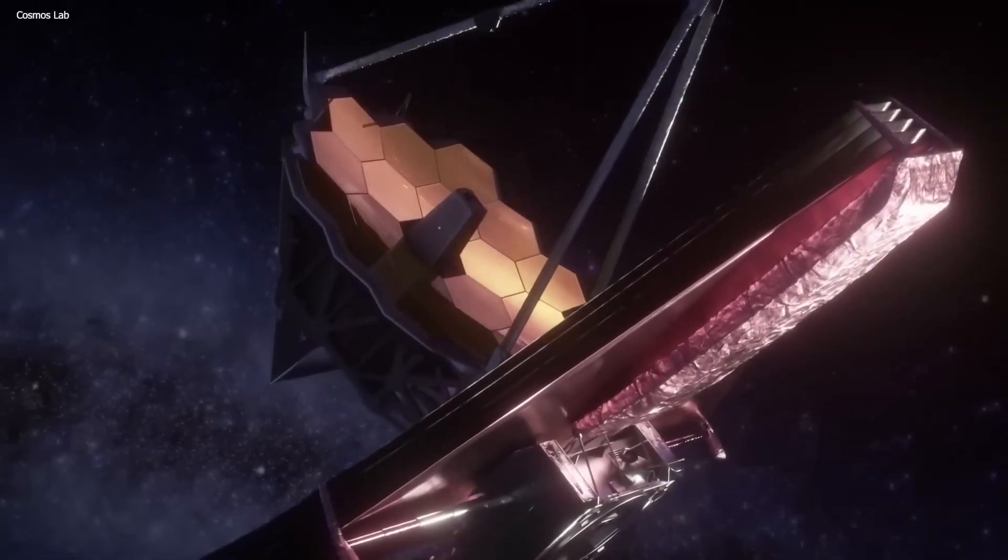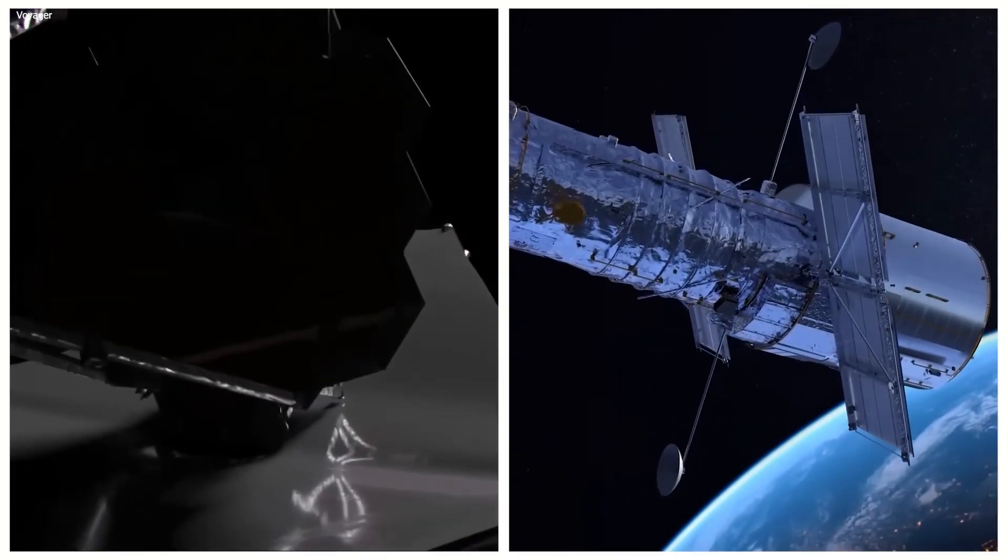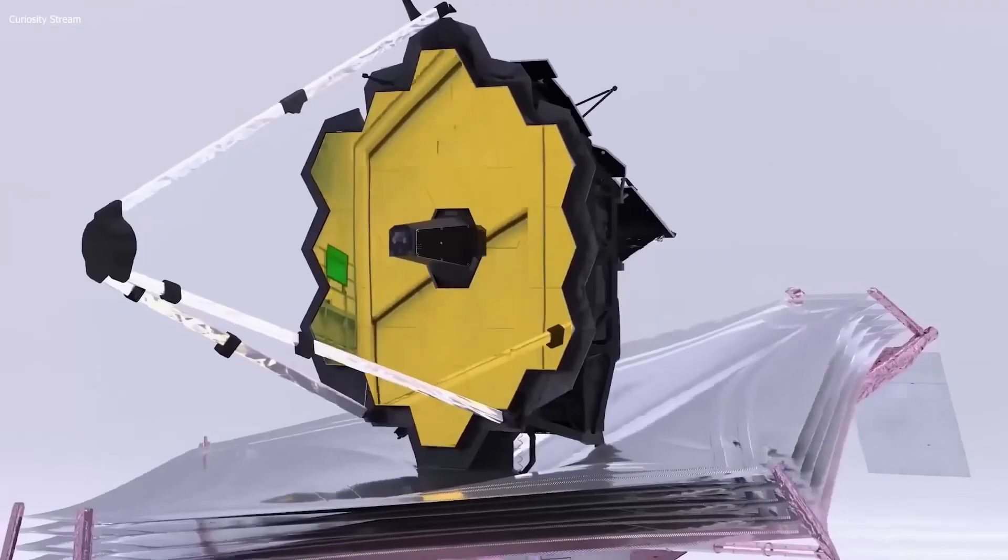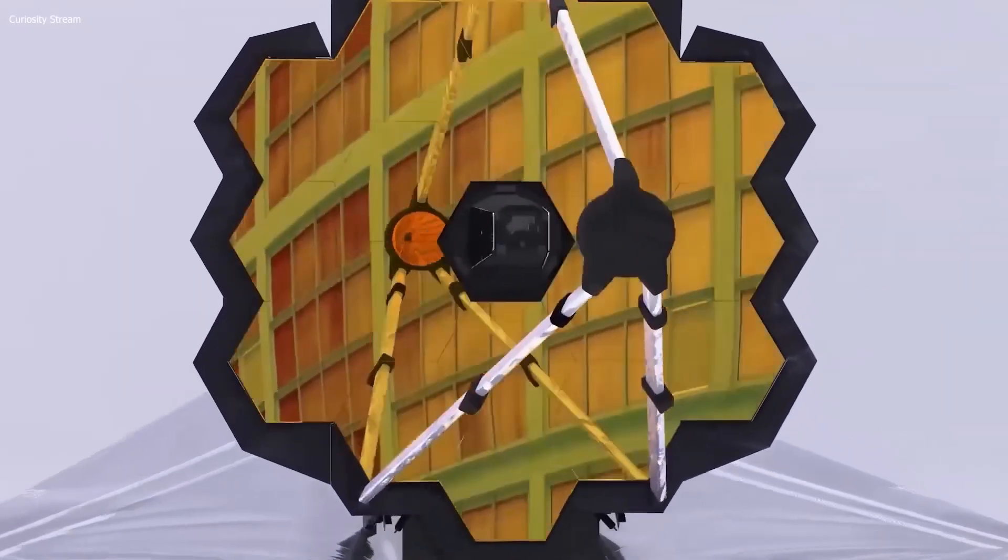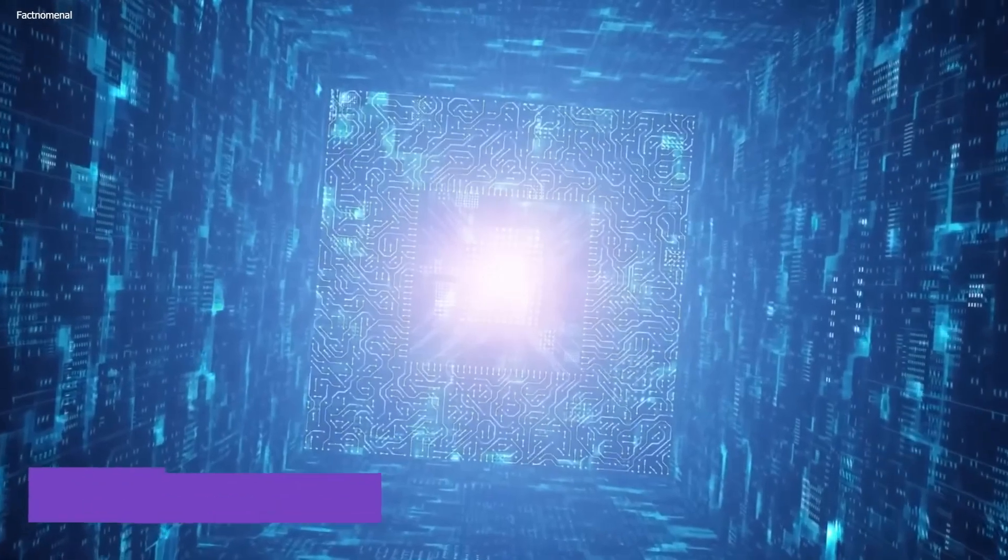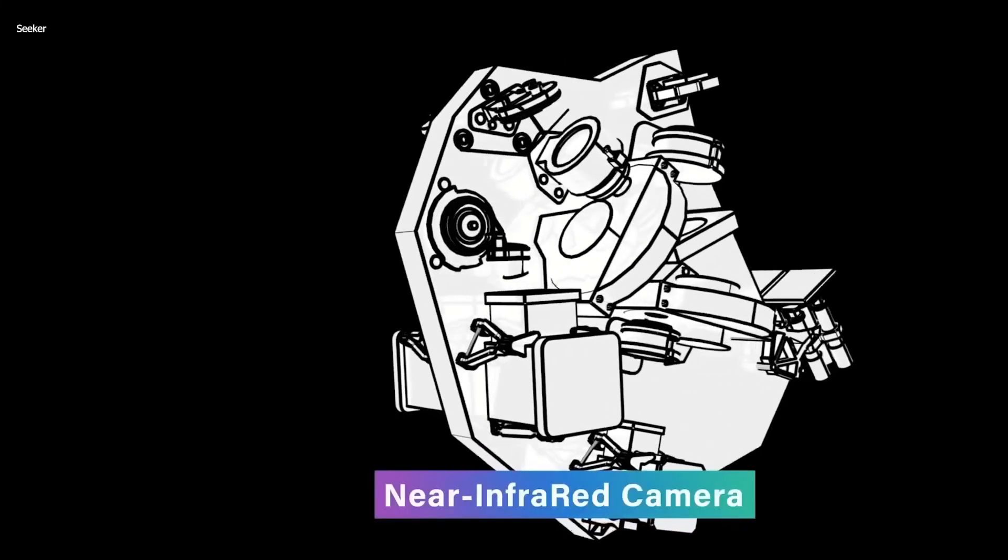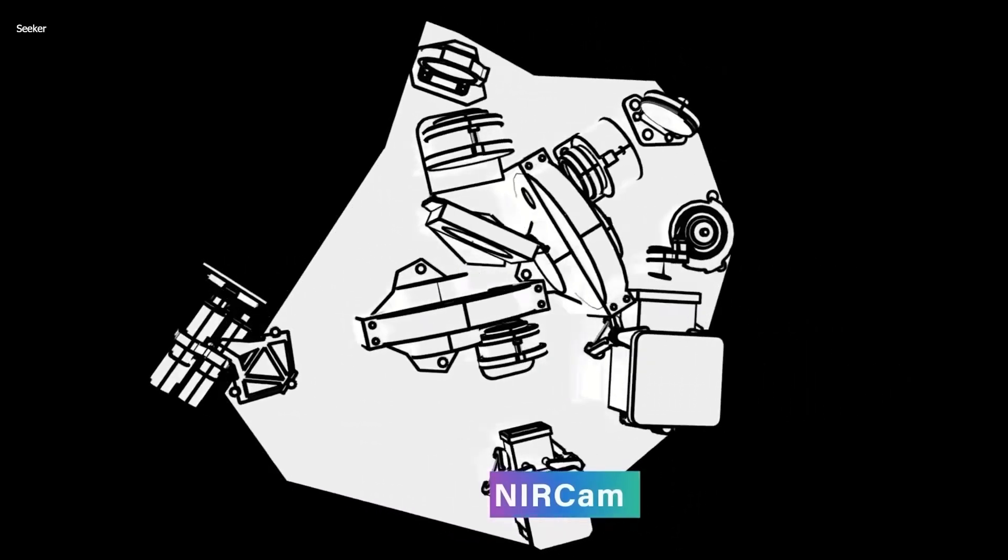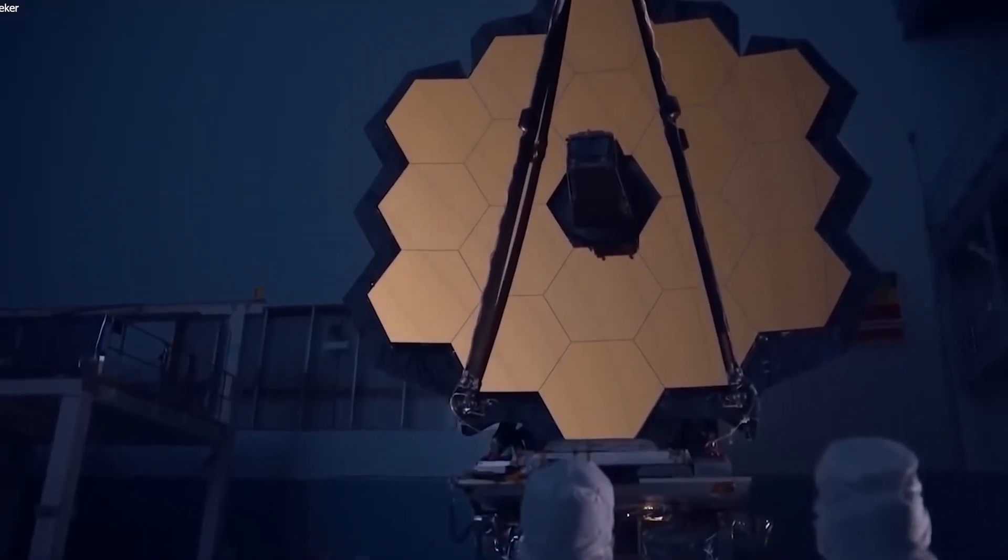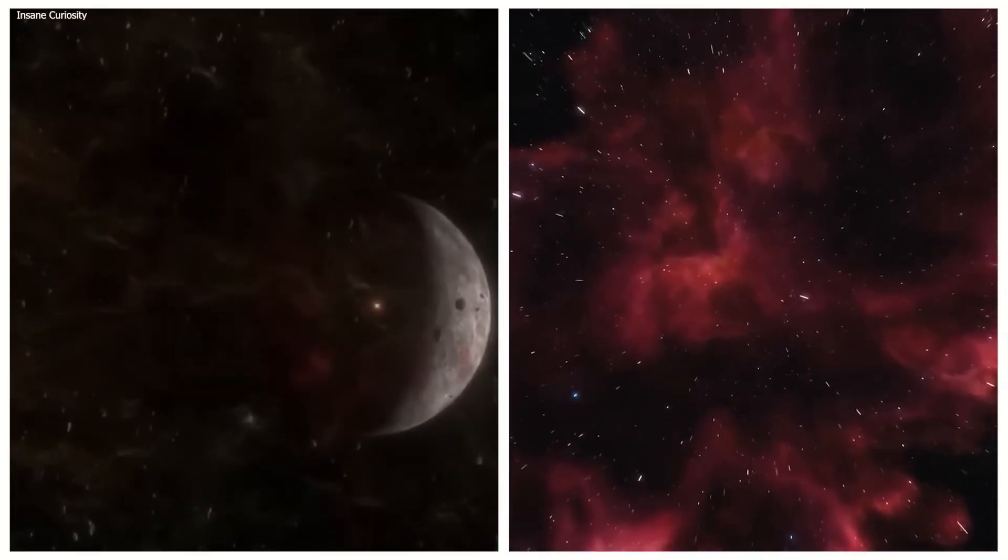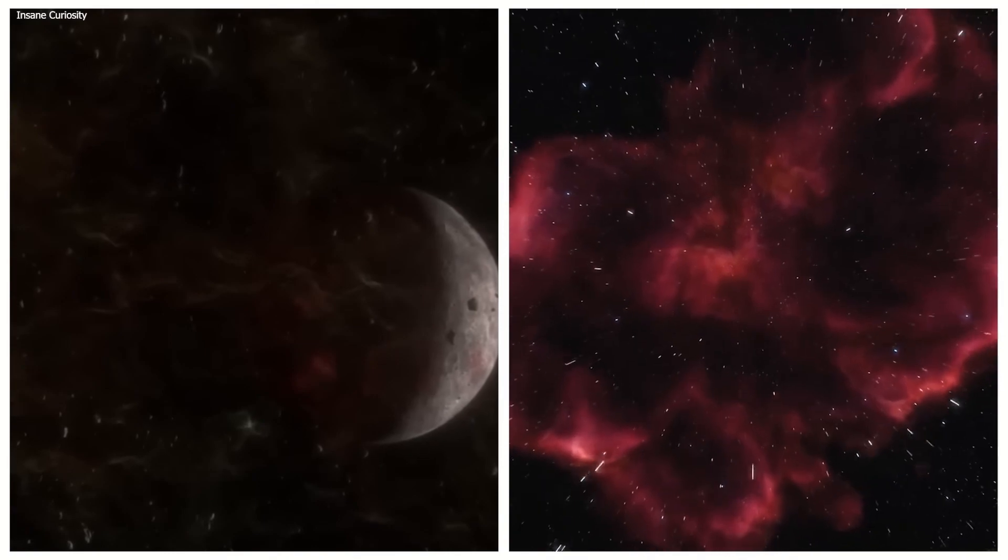The James Webb Space Telescope is essentially the Hubble Space Telescope's bigger, cooler sibling. Launched on Christmas Day 2021, this telescope has taken up residence in space, illuminating secrets from the universe's darkest and most distant corners. It's like the ultimate time machine, equipped with super-powerful infrared instruments that make it perfect for peeping into the past.